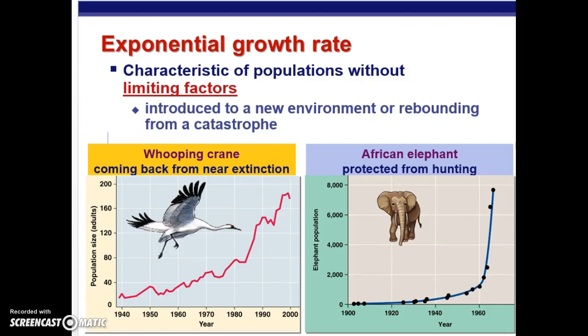This is the last part of Chapter 53's lecture on exponential growth rate. We have exponential growth rate when populations don't have limiting factors — for example, when a population is almost extinct, like African elephants, and they're introduced to a new environment or rebounding from a catastrophe. One characteristic of exponential growth rate when graphed is a very characteristic J-shaped curve.